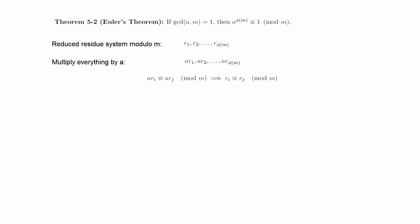Furthermore, if any two values in the new list are equivalent to each other, then we can see by the cancellation law that they must have come from the same element in the original list. In other words, the two lists are both reduced residue systems, and so they must be the same list modulo m.